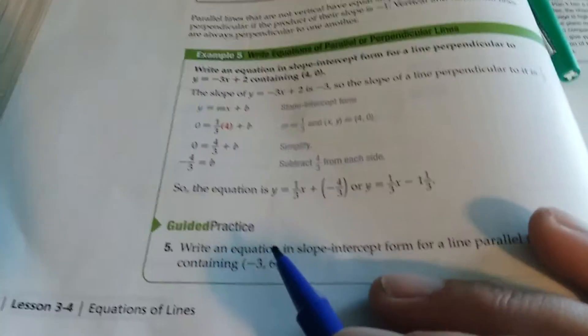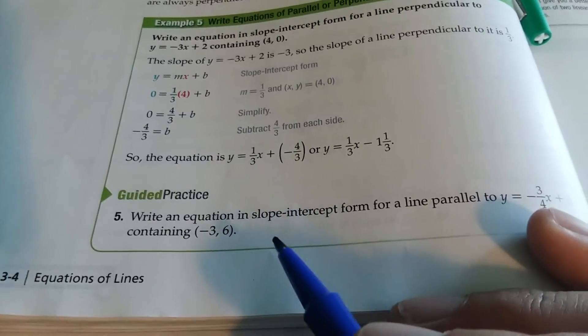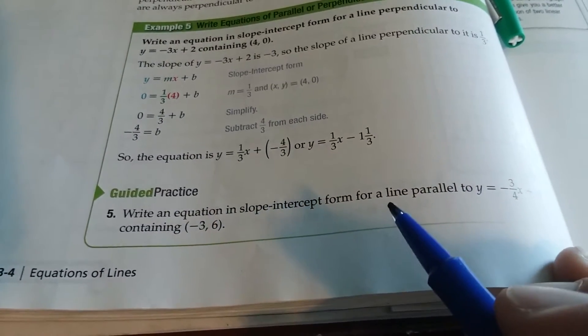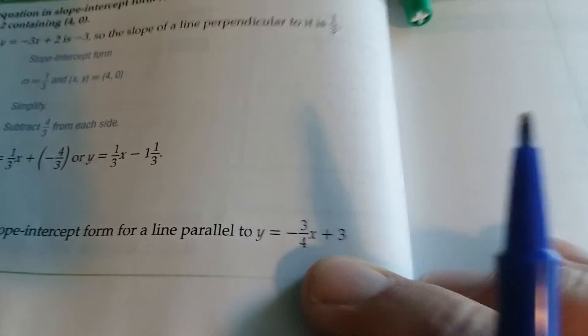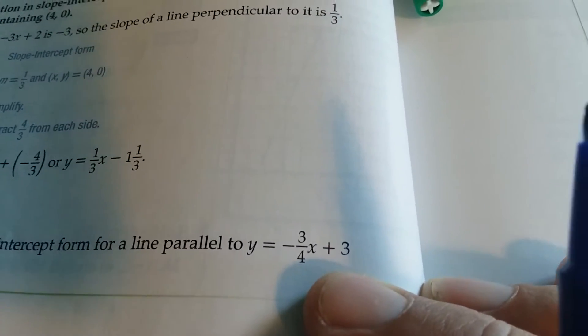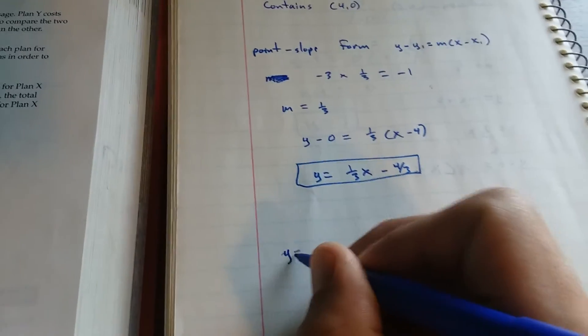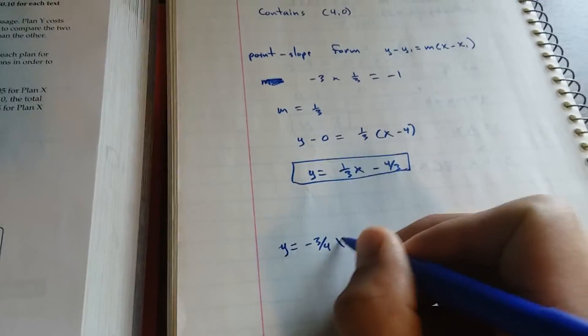Okay, your next one. Go ahead and do 5, the guided practice. Write an equation in slope-intercept form for a line parallel to y equals negative 3/4x plus 3, and then containing (-3, 6).